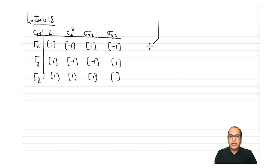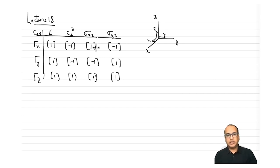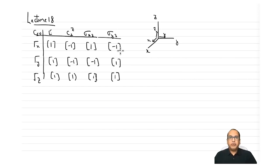These unit vectors are linear vectors of unit length along x, y, and z. We saw how their transformations give us the matrix representations. Now let us see why we are worried about unit vector transformations — we'll come back to it shortly.